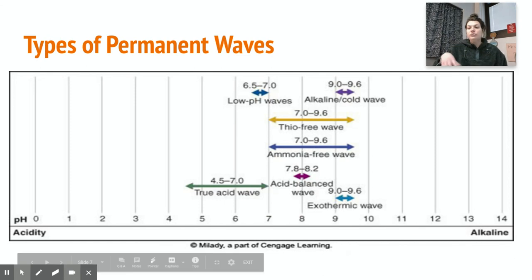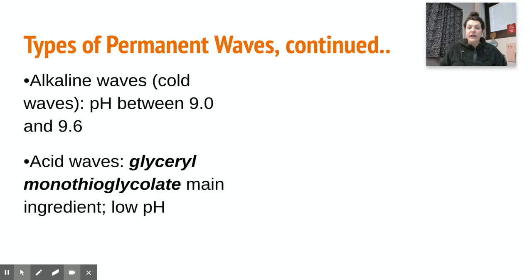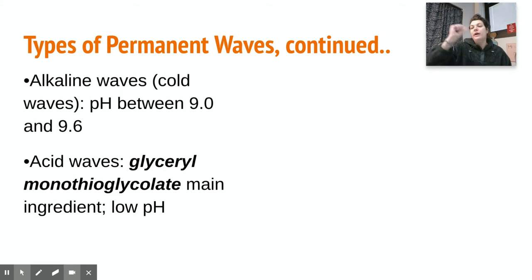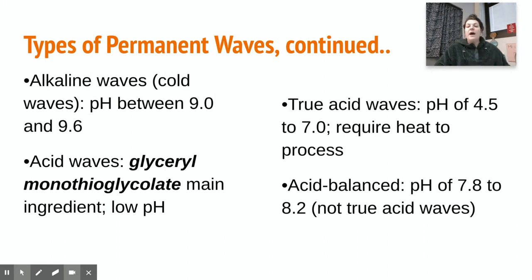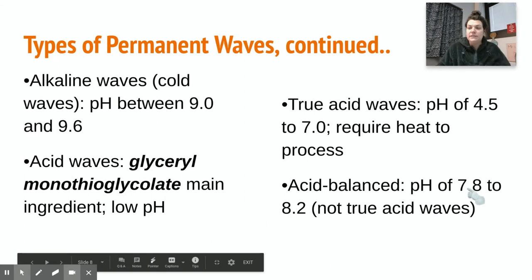These different waves are used based on your client's hair. Alkaline waves — your base cold waves — have a pH between 9 and 9.6. Acid waves use glycerol monothioglycolate as the main ingredient, giving them a low pH, because acid is less than 7 on the pH scale. The true acid wave has a pH of 4.5 to 7.0 and requires heat to process. The acid-balanced wave has a pH of 7.8 to 8.2 and is not a true acid wave since it's not at an acid pH.